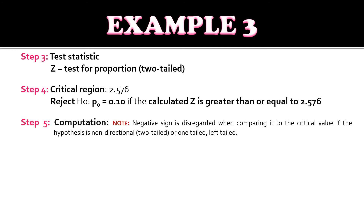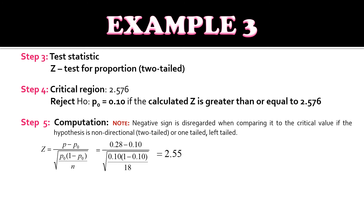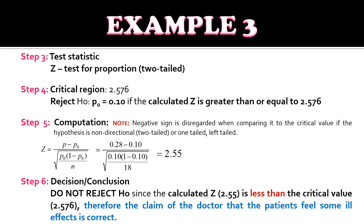For step five, since we're using two-tailed, the negative sign is disregarded when comparing to the critical value. Substituting values: Z equals 0.28 minus 0.10 divided by the square root of 0.10 times 1 minus 0.10 over 18, giving Z equals 2.55. For step six, we do not reject the null hypothesis since the calculated Z of 2.55 is less than the critical value of 2.576. Therefore, the doctor's claim that the patients feel some ill effect is correct.